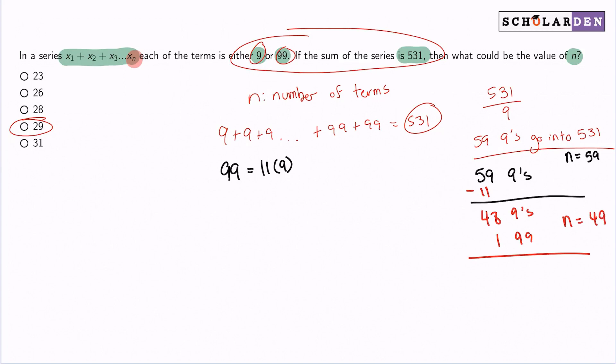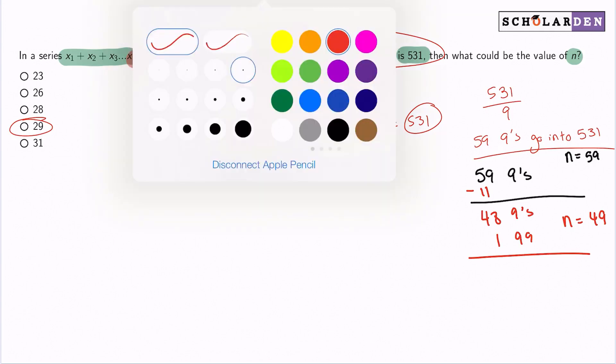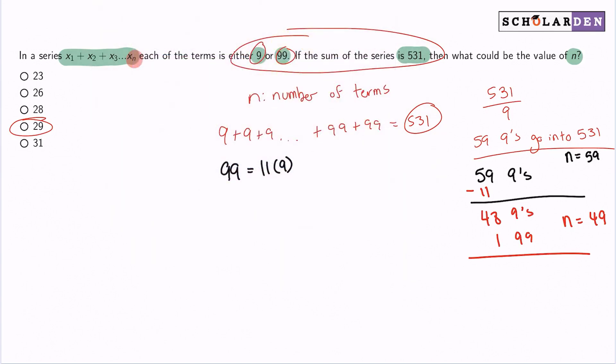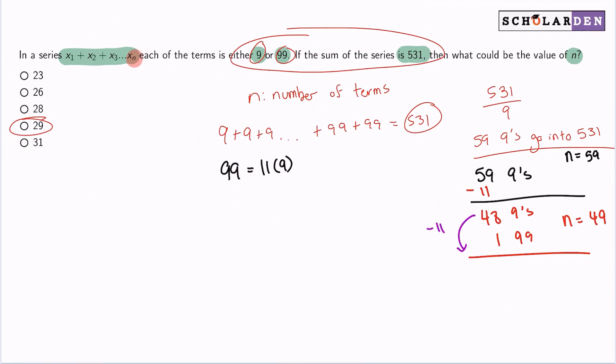You see what I'm doing here? And now if I keep going, and you're going to see a pattern pretty soon here, I can take away another 11 nines. And I can have 37 nines and now I can have two 99s. So now we have n equals 39. Do you see the pattern yet? 59, 49, 39, 29, 19. Those would all be answers.